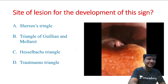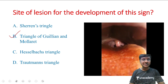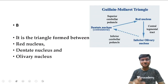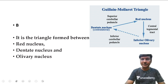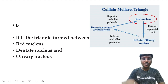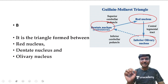You may wonder what the Triangle of Guillain and Mollaret is. It is a triangle formed between the red nucleus, the dentate nucleus, and the olivary nucleus. When there is a lesion at this Guillain-Mollaret triangle, there will be development of palatal myoclonus.